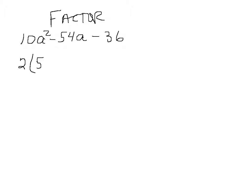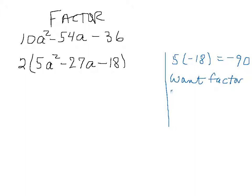So if I take a 2 out, I get 2 times 5a squared minus 27a minus 18. Now I'm at that point. And what I'm going to do is I'm going to multiply 5 times minus 18 and I'm going to get minus 90. And what I want here is I want factors of minus 90 whose difference is going to be minus 27.